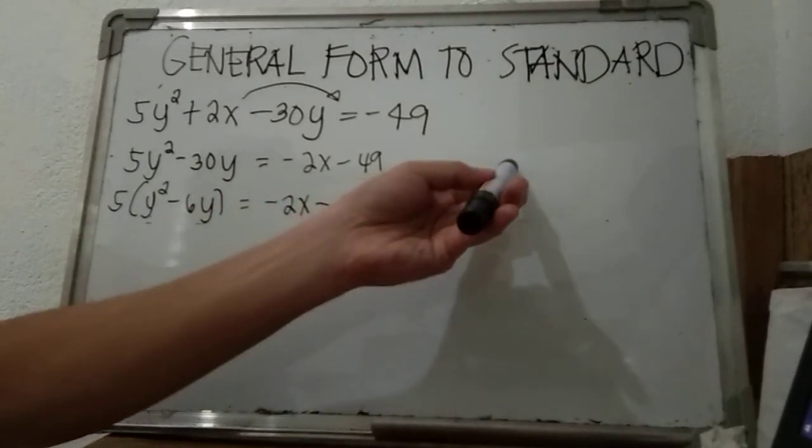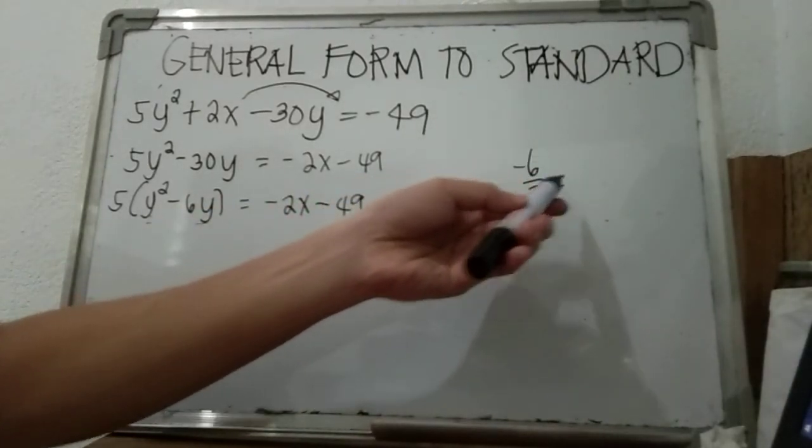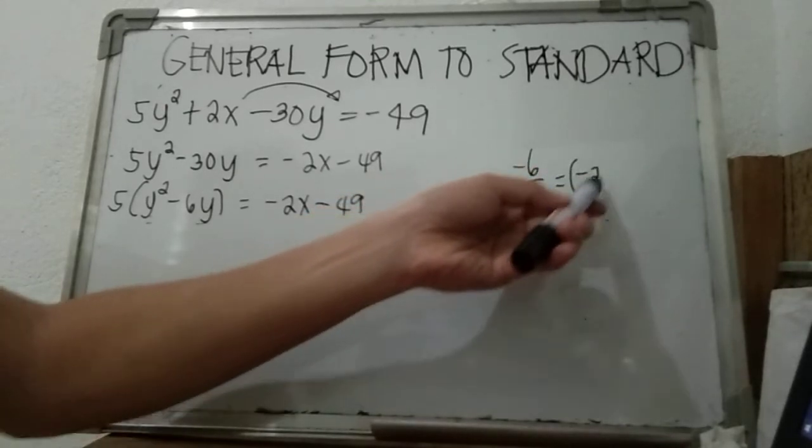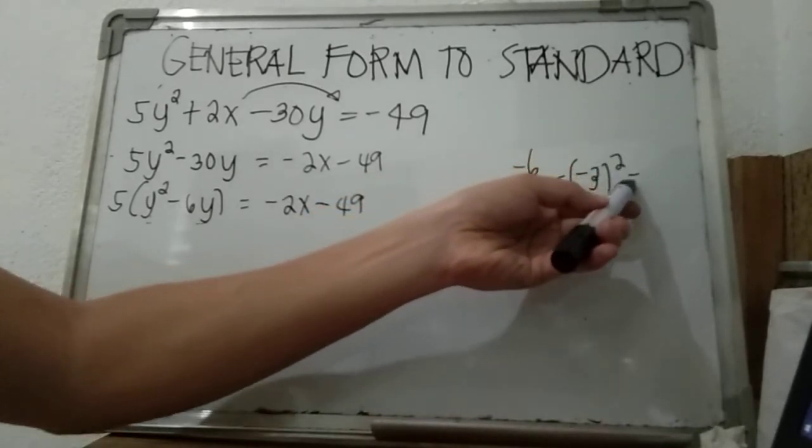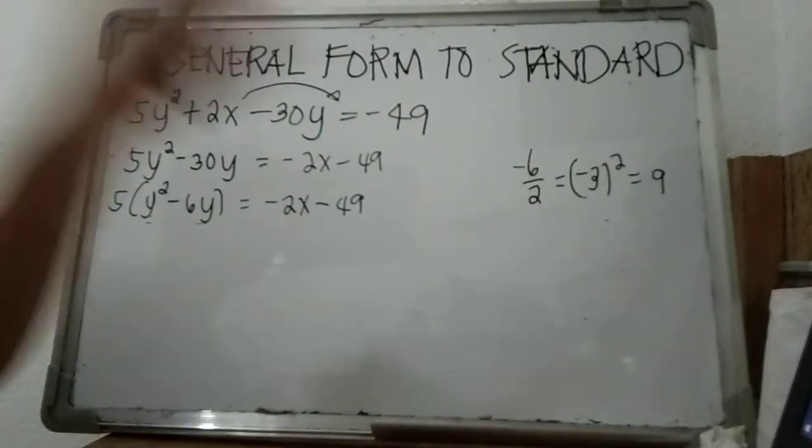Then always divide by 2. What is the quotient? Negative 3. If we square that, the product will be 9. So negative 3 times negative 3 is positive 9. This is the value we are going to add to make it a perfect square trinomial.